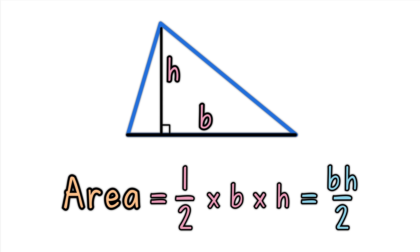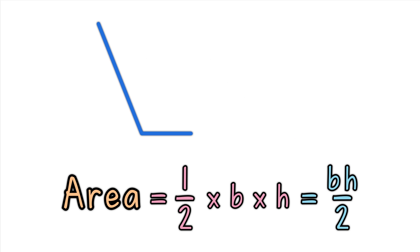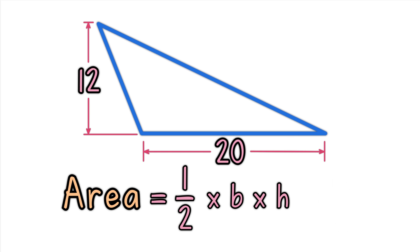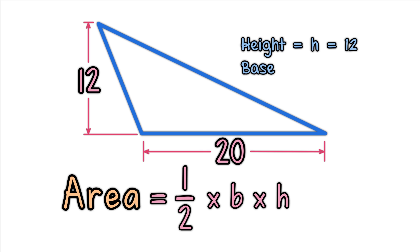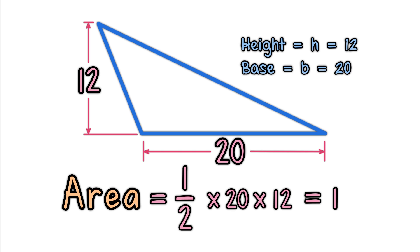Example: what is the area of this triangle? Note that 12 is the height, not the length of the left-hand side. Height equals h equals 12. Base equals b equals 20. The area equals one-half times the base times the height, which equals one-half times 20 times 12, which equals 120.